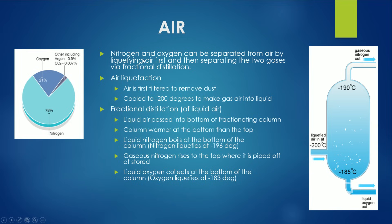Nitrogen and oxygen can be separated from the air by liquefying the air and then separating the two gases by fractional distillation. Air is first filtered to remove dust and things like that, and then cooled to around negative 200 degrees, which is when air in its gas form turns into liquid air.